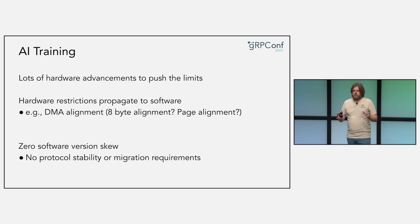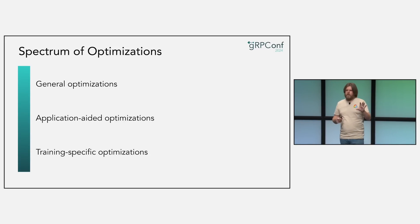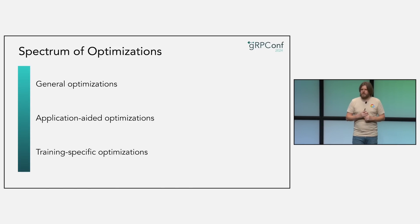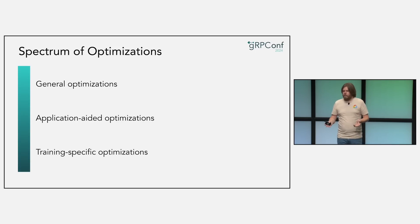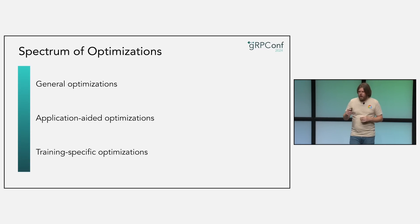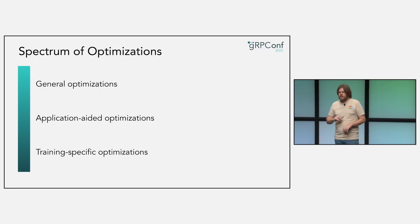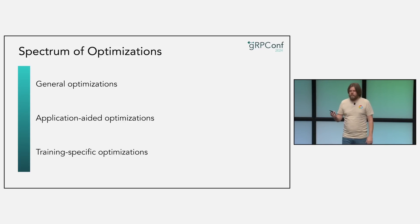This is the environment gRPC is being used and optimized in — mostly without most of you doing anything. How does this impact you? There are a couple of optimizations happening in gRPC over the past couple of years. Some are general-purpose — for example, reducing CPU usage of metadata processing benefits everyone. But some optimizations for AI workloads only benefit certain applications, such as things we've recommended for years as ways to tune gRPC.